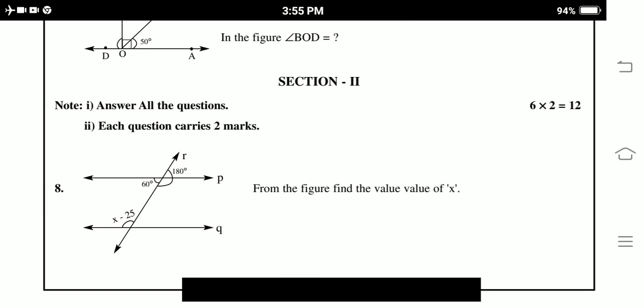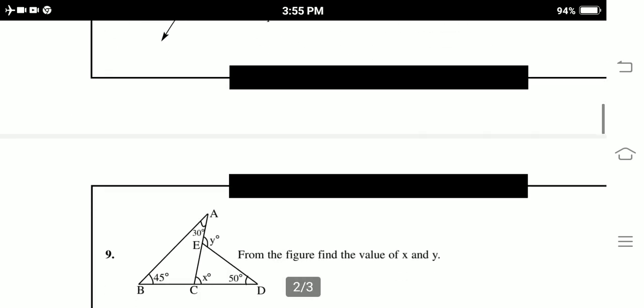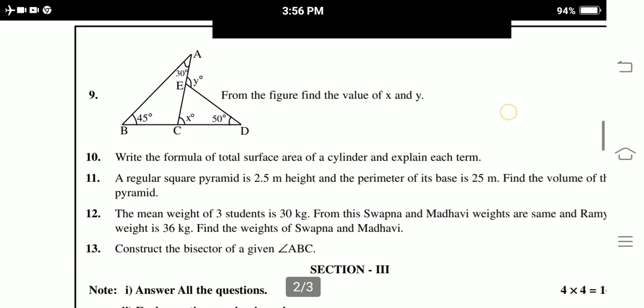Section 2, 6 questions on tie. Each question carries 2 marks. 6 to the 12 marks. 8 questions in the median, choose Kondi. Find the figure, from the figure, find the value of X. Next, 9th one also choose Kondi.